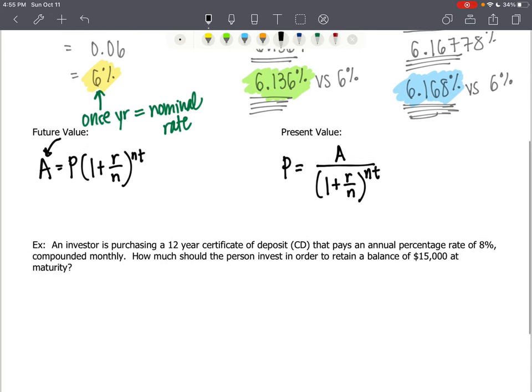If we want to solve this problem where an investor is purchasing a 12 year certificate of deposit that's called a CD pays an annual percentage rate of 8% compounded monthly. How much should the person invest in order to retain a balance of $15,000 at maturity? So, they want to know what present value do I need if I end up with $15,000.